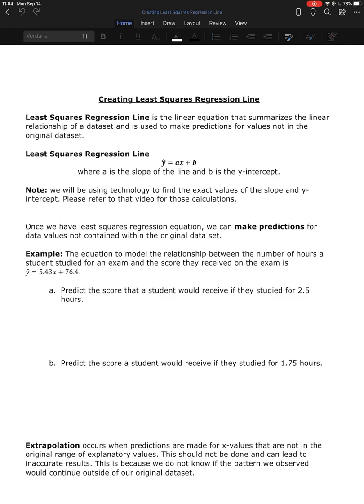So the least squares regression line follows the general form y hat equals ax plus b. So this little guy on top of the y here, that's read as y hat, and that's a way for us to be able to tell that this is a model from a data set that we're using to make predictions. Not everyone puts the little hat on it, some people just say y equals.